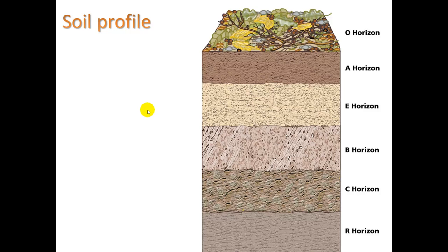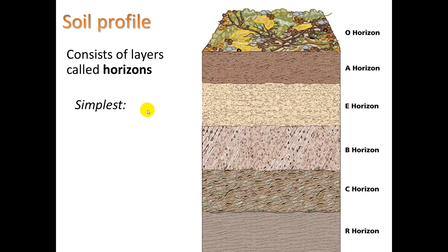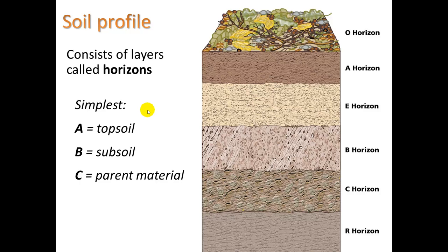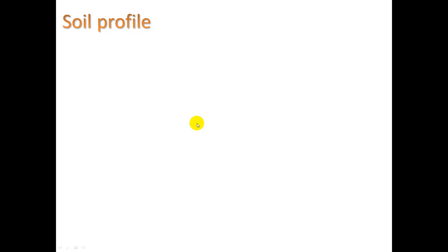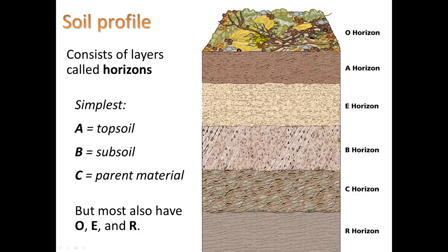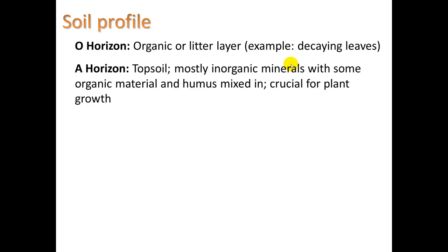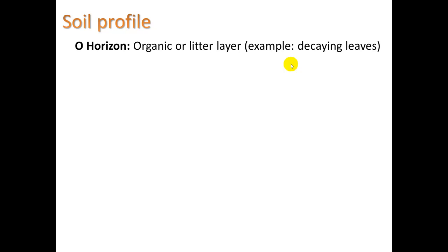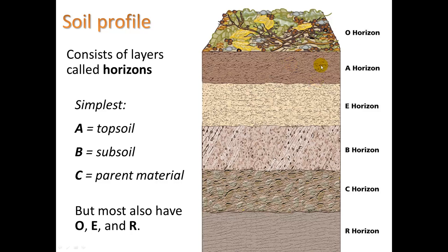Let's take a look at some of the layers within soil — you do have to be familiar with these. Soil consists of layers called horizons. In its simplest form you have A on top — the topsoil — then layer B, the subsoil, and layer C, the parent material. But there are also layers O, E, and R. The O horizon is the organic or litter layer — for example, decaying leaves. The A horizon is topsoil: mostly inorganic minerals with some organic material and humus mixed in. Humus is partially decomposed litter, crucial for plant growth, and it's always seen as being darker.